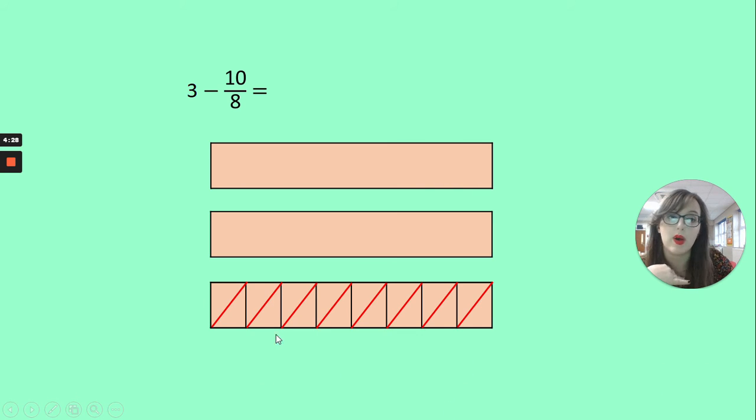And I'm going to take away all 8. I need to take away 10, which means 2 more. So I shall split my second bar model into eighths and take away those 2 more. This leaves me with 1 hole that I haven't needed to subtract from.